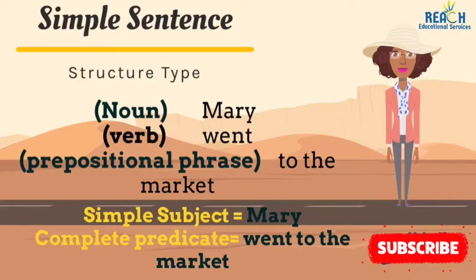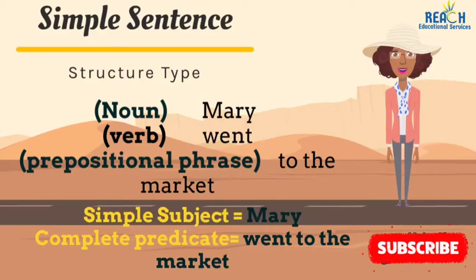Here we have the simple sentence demonstrated. Our sentence is: Mary went to the market. Let me break it down for you. Mary is the noun, went is the verb, and to the market is the prepositional phrase. You may ask: what if I don't have a Mary, a John, or a Tom, but have he, she, or I? Yes, you can use pronouns and it will still be a simple sentence. So the simple subject is Mary and the complete predicate is went to the market.